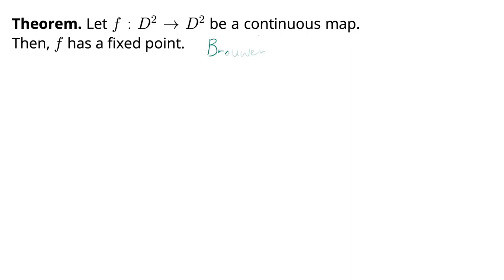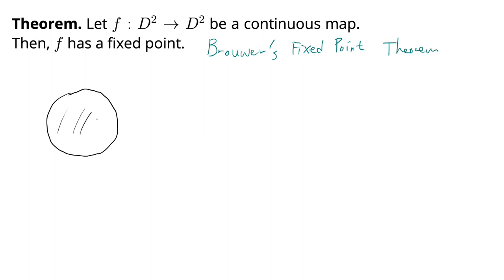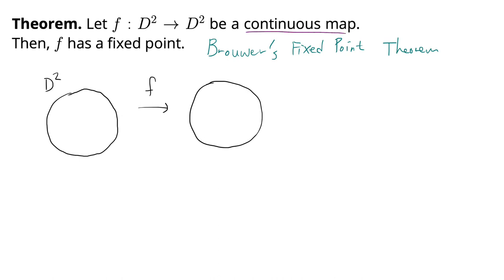Here we have a famous theorem of Brouwer, namely Brouwer's fixed point theorem in the special case for D2. D2 is a two-dimensional disk — you can think of it as the circular disk including the boundary and everything inside. We have a map F taking D2 to D2, and Brouwer's fixed point theorem states that when we have a continuous map of this form, then F has a fixed point: there is at least one point being mapped exactly to itself.